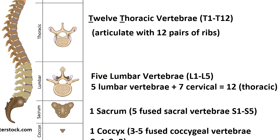Next you have the lumbar region, which consists of five lumbar vertebrae abbreviated as L1 through L5. These vertebrae are larger and denser than the preceding vertebrae, allowing them to support the weight of the upper body. Adding five lumbar to seven cervical gives you 12 — the same as the thoracic count. Also, people who work nine-to-five jobs often complain of lower back pain when they clock out at five, so that's how to remember there are five lumbar vertebrae.